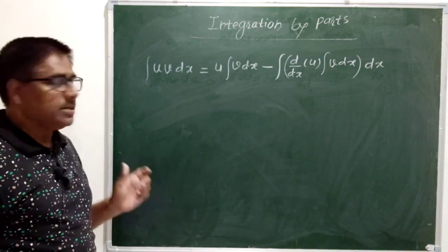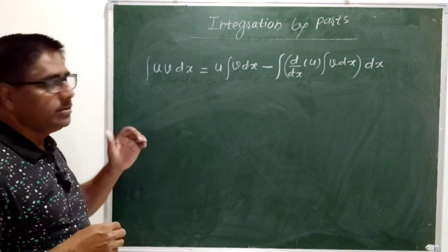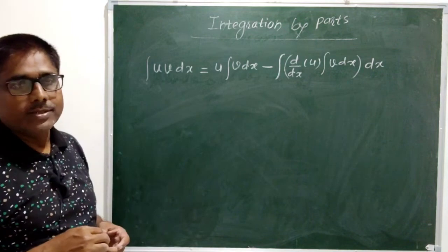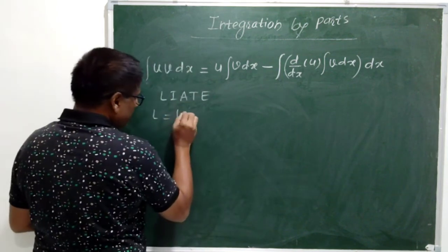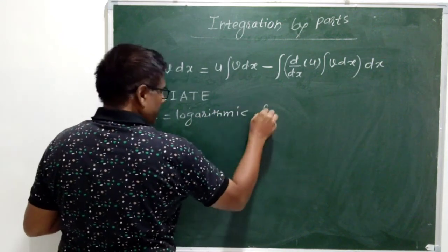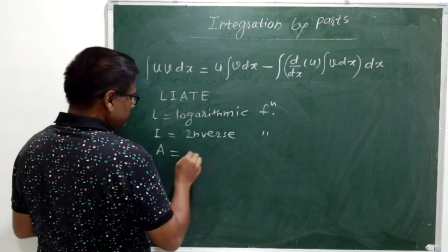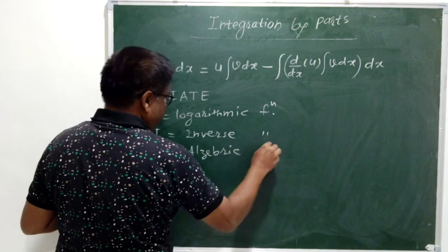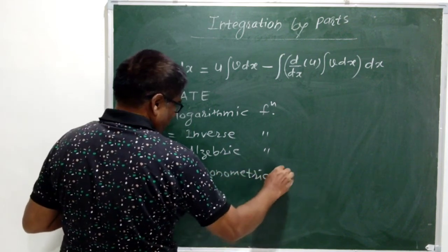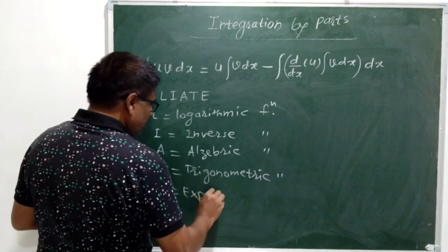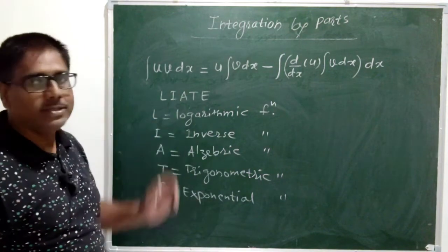For solving a problem consisting of two functions in multiplication, the question is how to select the first function out of two. The first function is selected as per the following preference: the LIATE rule. L stands for logarithmic function, I stands for inverse function, A stands for algebraic function, T stands for trigonometric function, and E stands for exponential function. The logic behind this rule is that the first function should be the easily differentiable function, and based on that this preference is made.